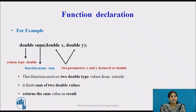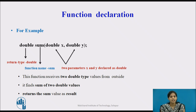Now let us see an example of how the function is declared. Suppose we want to calculate the sum of two values of type double using a function. First we declare the function: double is the return type, the name of the function is sum, which takes two parameters x and y of type double. It calculates the sum of two double values and afterwards returns the value calculated by the function sum.